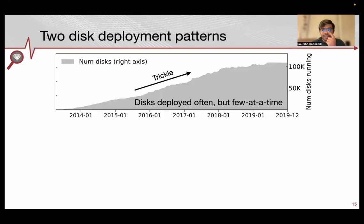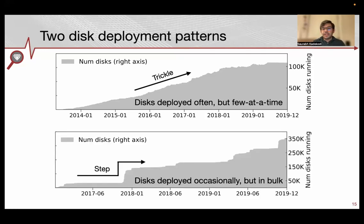An interesting insight from our analysis involves two different deployment patterns. The first is trickle deployment, where a disk population grows slowly over time with a steady deployment of a few disks every day or every few days. In contrast, step deployment involves tens of thousands of disks deployed in a very short span of time, such as a couple of weeks, where disk populations increase like a step function.